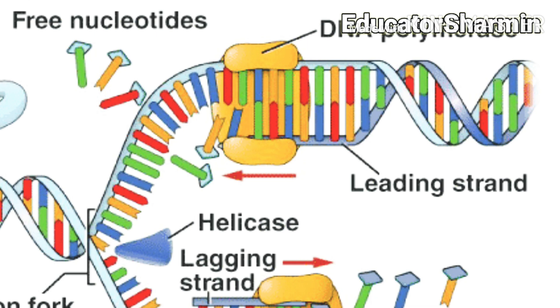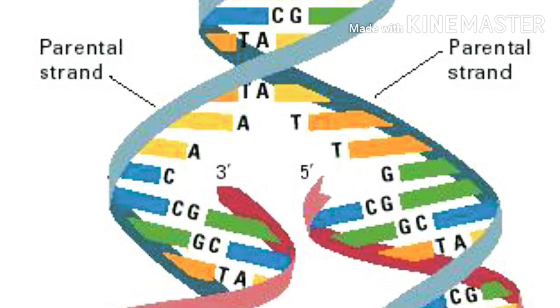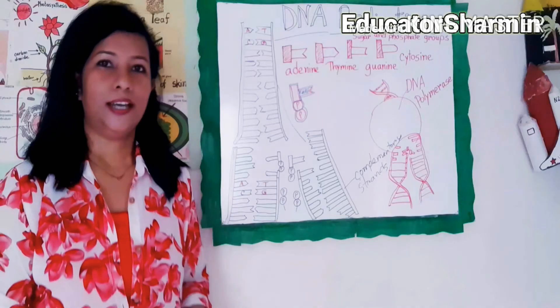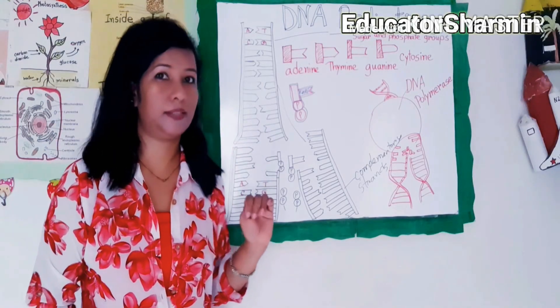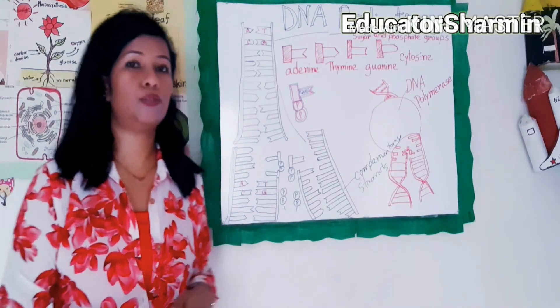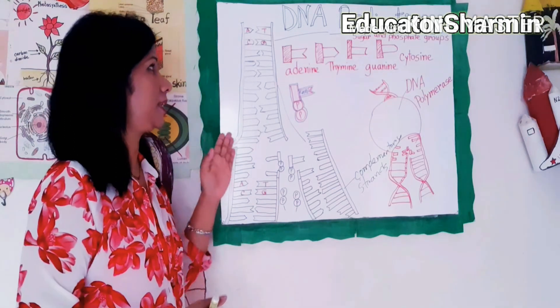In the nucleus, there are nucleotides to which two extra phosphates have been added — two extra phosphates. You can see here this is a DNA replication diagram.